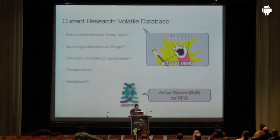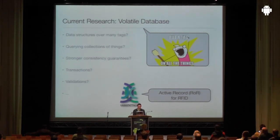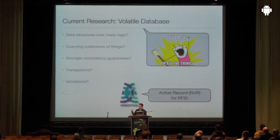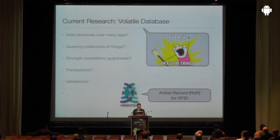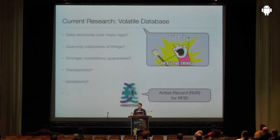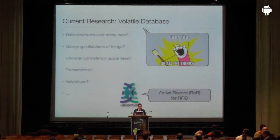To conclude, I'll give a sneak preview of ongoing research centered around a vision where the entire environment is pervaded with tags — 'tag all the things.' This raises many problems: How do you put data structures across many tags? Can you persist an object graph across different tag memories? Can you query collections of things — for example, query books in a library? What if you scan more books after launching a query — do you redo it? Can we provide stronger consistency guarantees, like transactions, where either all three tags in an operation are written or none are?